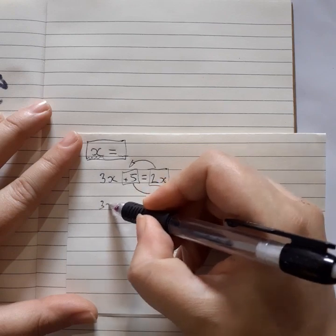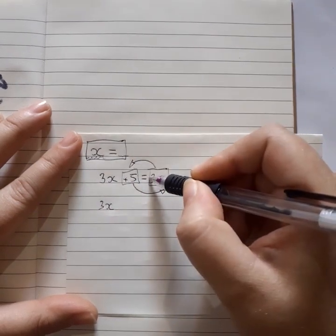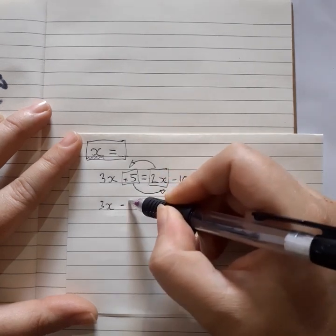So then we've got, this is what we have. This is what we moved. If we move it, this one's positive here. So if we move it, it becomes negative.